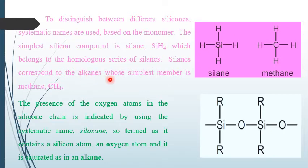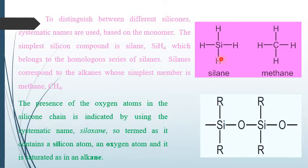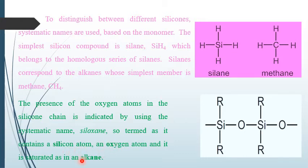Silane corresponds to alkanes, with the simplest member being methane — its structure is just like methane. In methane, carbon is bonded to four atoms; in silane, silicon is bonded to four atoms. When oxygen and organic groups replace two hydrogen atoms in silane, we call it a siloxane compound. The presence of an oxygen atom in the silicon chain is indicated by using the systematic name siloxane — a compound containing silicon-oxygen bonds, saturated like alkanes.